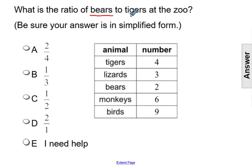We need to focus in on the bears to tigers for our ratio. There are two bears and four tigers, so that would give us a ratio of two to four.